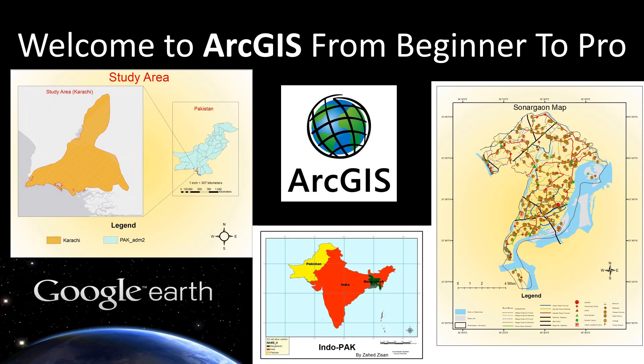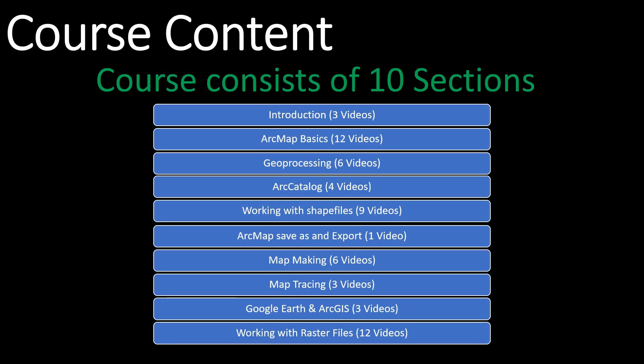Welcome to ArcGIS from Beginner to Pro. Let's look at the course contents. The course consists of 10 sections and a bonus section, so altogether 11 sections. These are the 10 sections and the number of videos each section has.